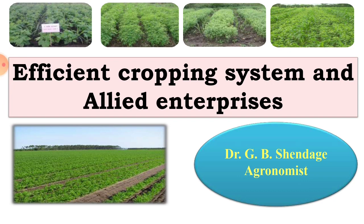In the last lecture, we have seen the classification of cropping system — the definition of cropping system. Cropping system is classified into three major groups: first is monocropping, second is multiple cropping, and third is fallow. This is the classification of cropping system.